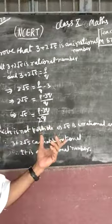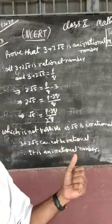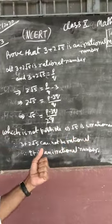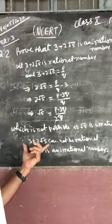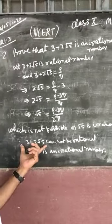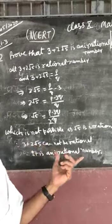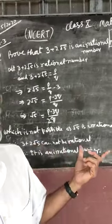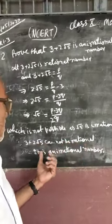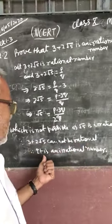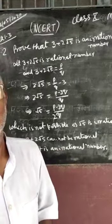An irrational number can never be equal to a rational number. Therefore 3 plus 2 root 5 cannot be rational, meaning our hypothesis is wrong, and therefore it is an irrational number.